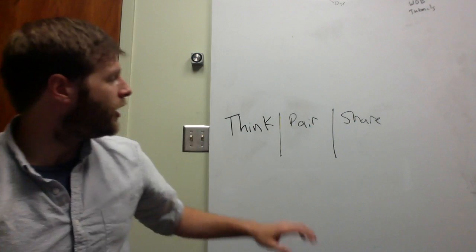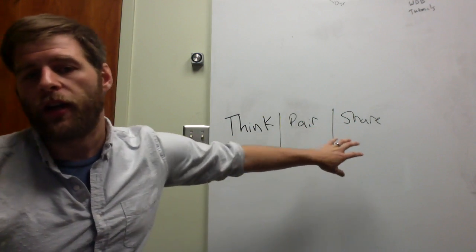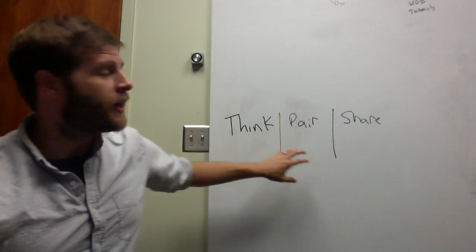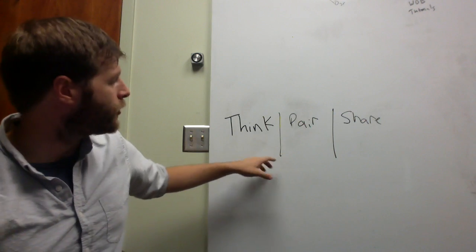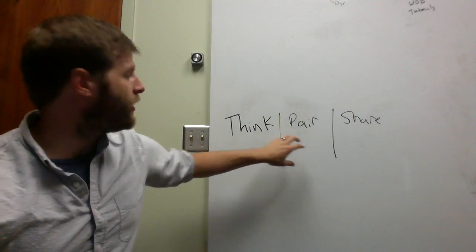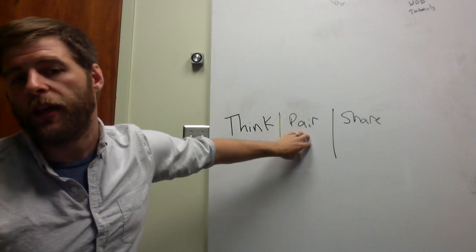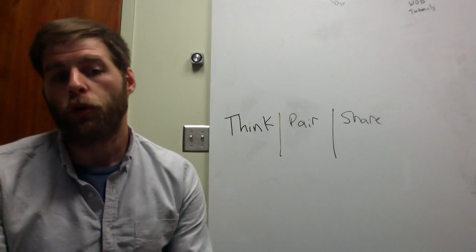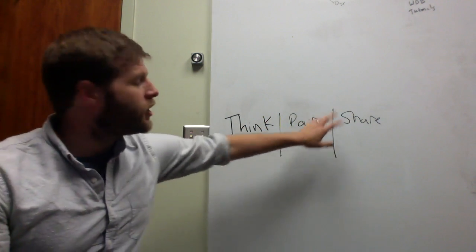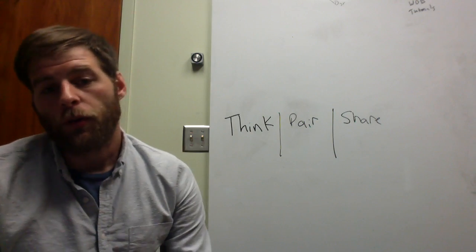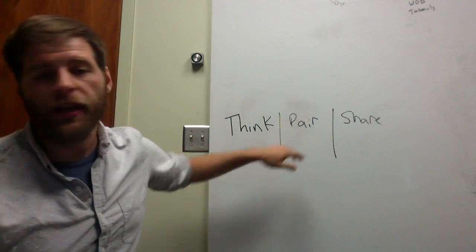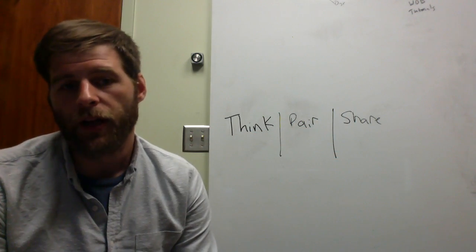So when you're integrating into your instruction, think about what you want out of the activity. And it might have you emphasize different parts of this. For some, it might be that I'll not have them think at all. They'll think while they're paired. I'm going to give them a group project to do. So you do think and pair at the same time. You might say, you know what, the share part doesn't really work for me. I'm not even going to do it. I'm going to have them think and pair and that's going to be the way that I go within that.